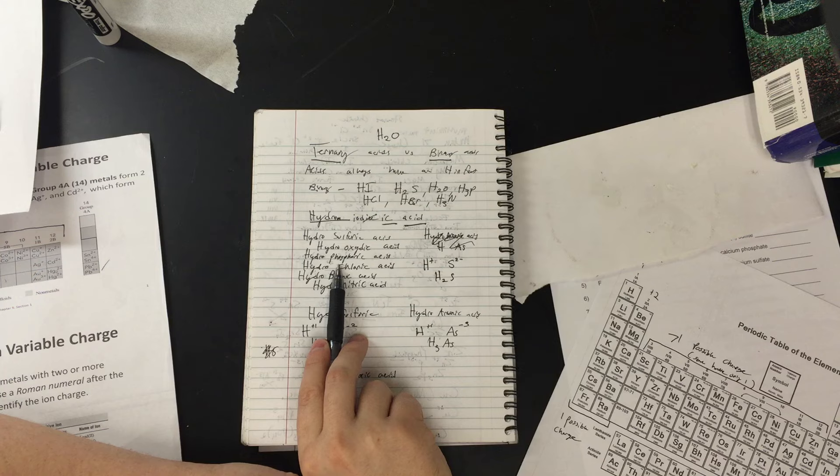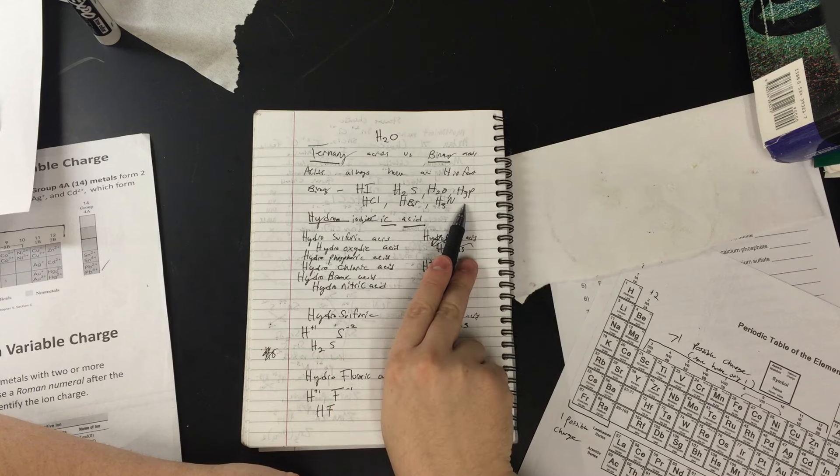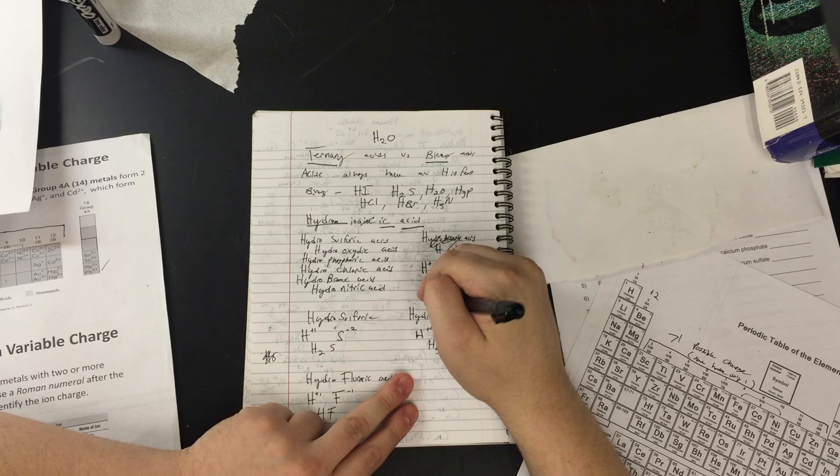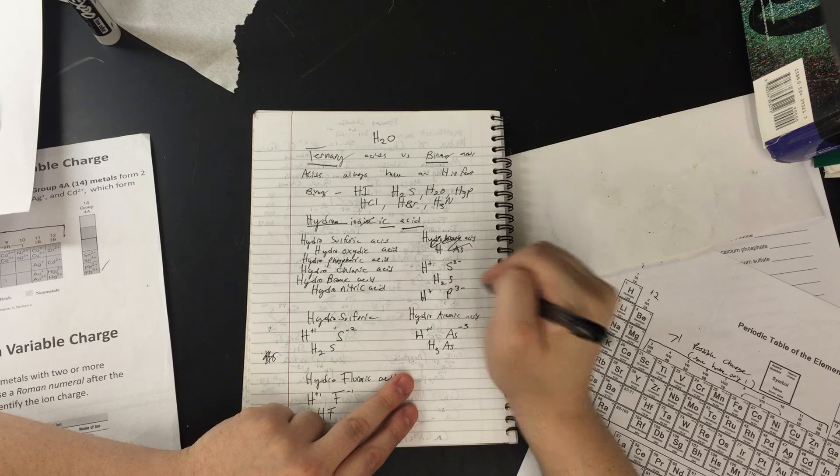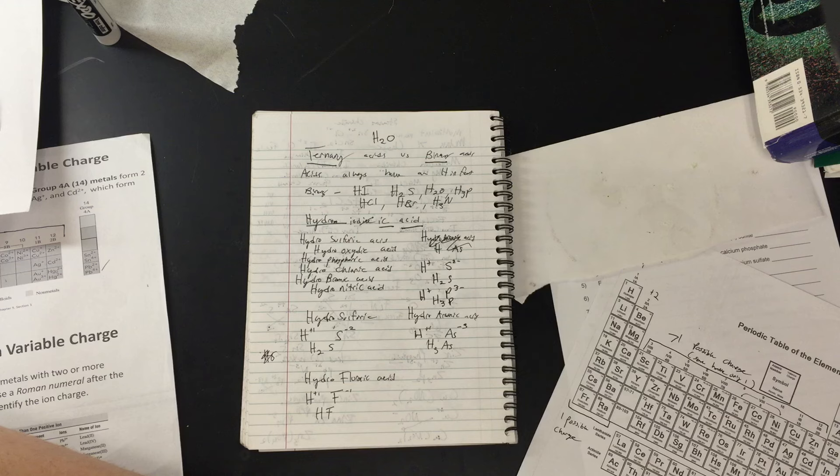Hydrophosphoric acid. Again, the hydro is telling us that it's binary. It's going to be H and another element. So hydrophosphoric acid, H3P. How did I get that? Well, we start off with hydro, H, phosphoric - that's phosphorus, right? P3-. Switch the two, H3P. It's as simple as that.